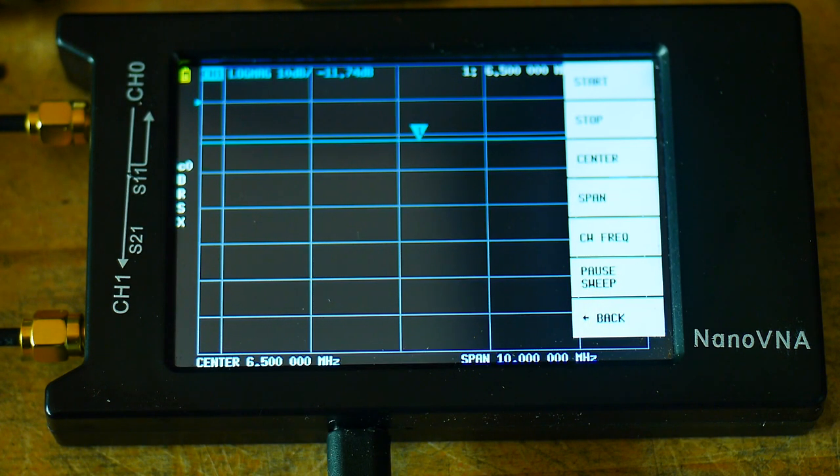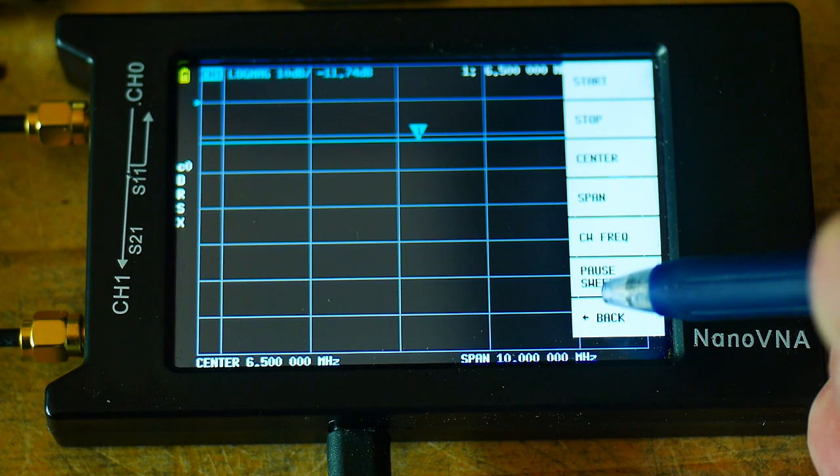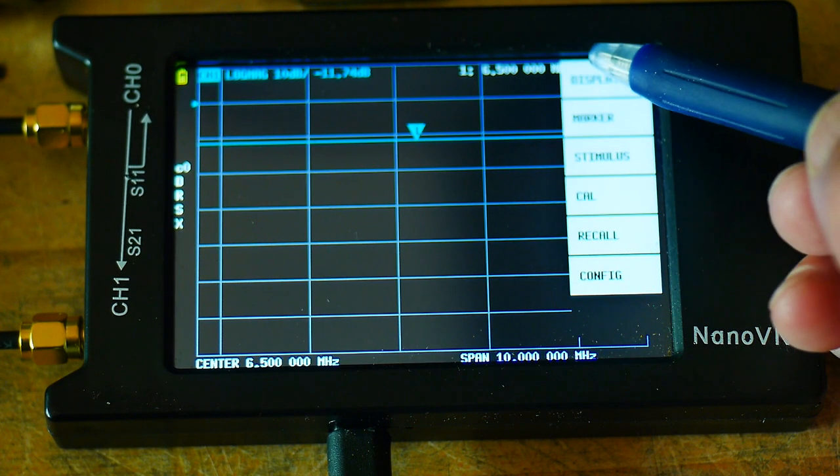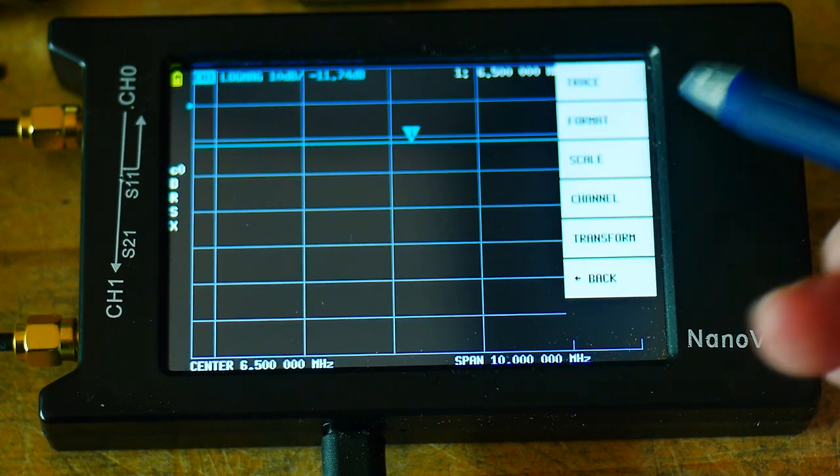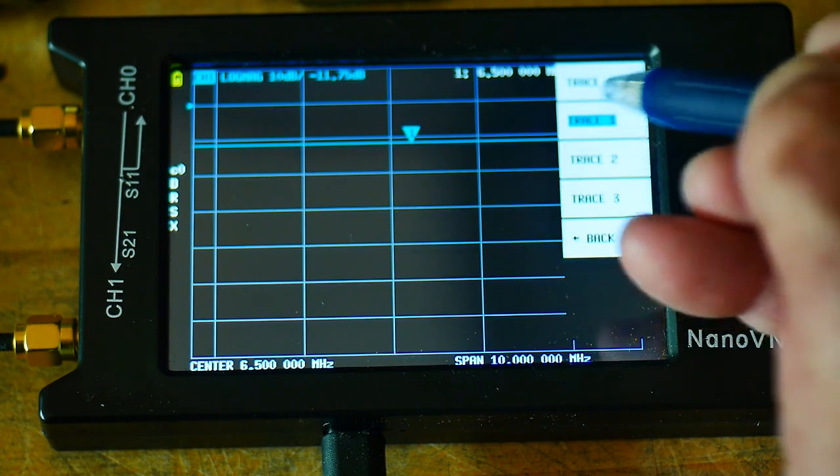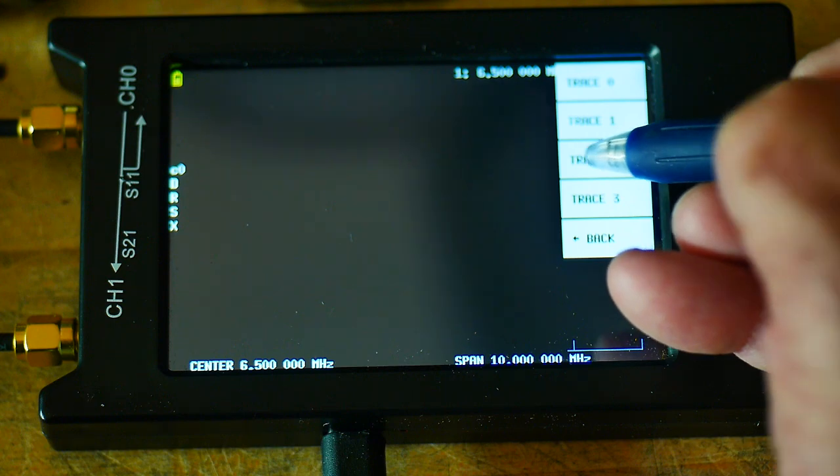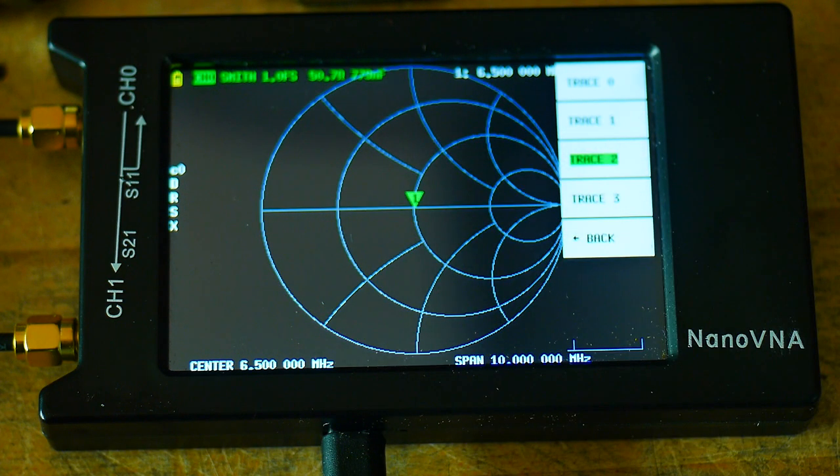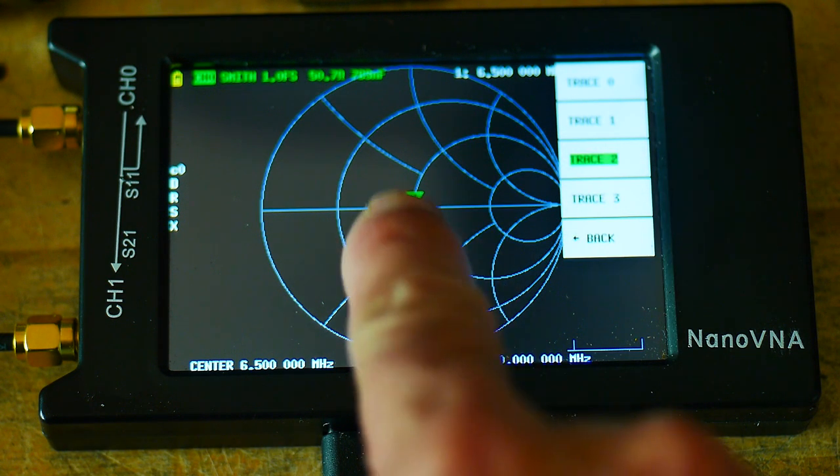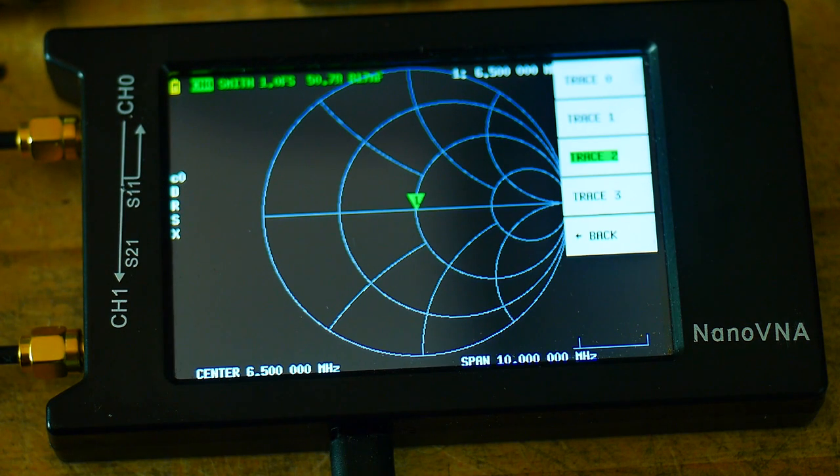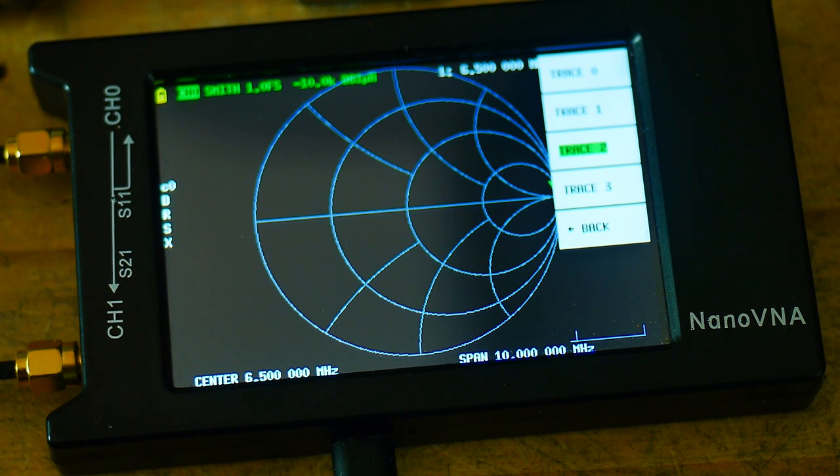Okay. So now the other tests we're going to do are all Smith chart tests. So let's back up, go to display. Display. Trace. Let's turn off that blue trace. Let's turn on the green trace, which is the Smith chart. All right. Right there at 50 ohms, because we're measuring attenuator. So that's good. It's measuring 50 ohms.